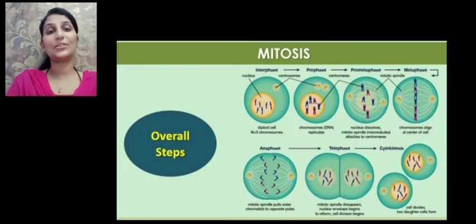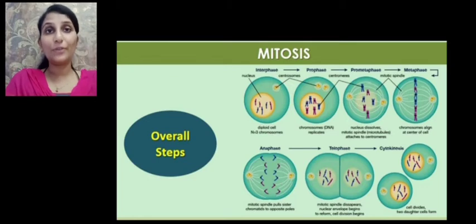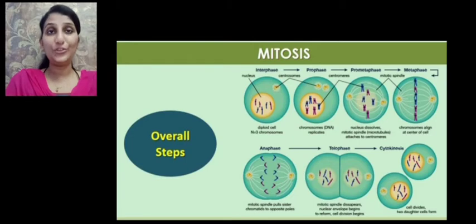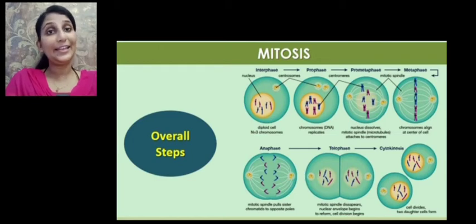So let us summarize all the steps in mitosis. Mitosis is an equational division in which the number of chromosomes is the same in the parental and also in the progeny cells. It involves two steps: karyokinesis and cytokinesis. Karyokinesis is division of the nucleus involving prophase, metaphase, anaphase and telophase. Initially before the mitotic phase, the cell undergoes interphase during which the cell grows and the DNA gets replicated.